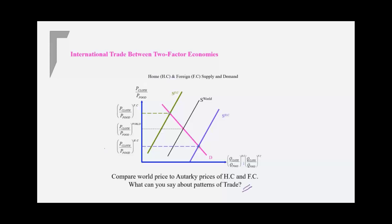So the relative price of cloth is much lower in the home country. So foreign country would want to buy this good from the home country. So home country will export cloth, and the foreign country would export food.